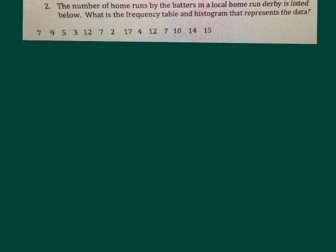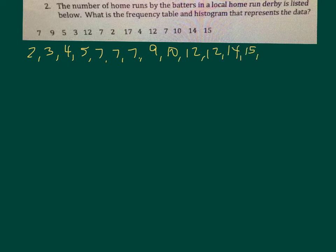Number 2. The number of home runs by the batters in a local home run derby is listed below. What is the frequency table and histogram that represents that data? So put your numbers in order. If you put those numbers in order, it goes 2, 3, 4, 5, 7, 7, 7, 9, 10, 12, 12, 14, 15, 17.